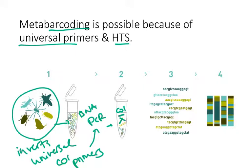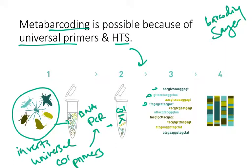We can use that CO1 to figure out what species it is. We've used universal primers to get our CO1 PCR product, and then we use high-throughput sequencing to get all of this sequence data back. With Sanger sequencing — which is used with DNA barcoding — you have to do each individual at a time. The benefit of high-throughput sequencing is that it's massively parallel: you can sequence many things at once and get a bunch of sequence data back together.